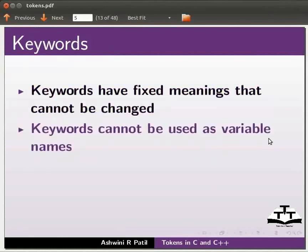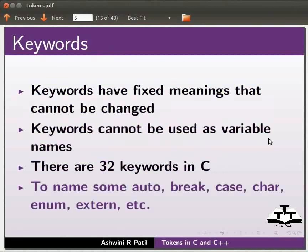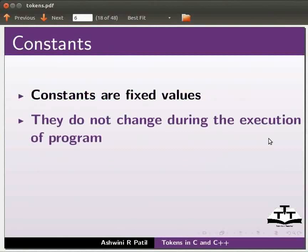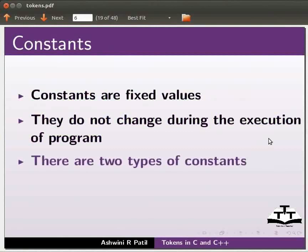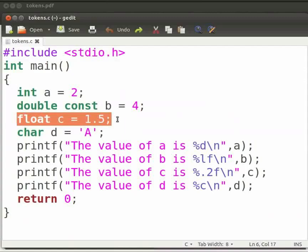Keywords are variable names. Constants are fixed values. Keywords have a number of distinct characteristics and are binary to the 96.